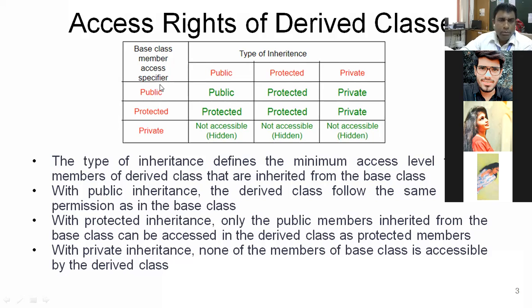If the base class member is private, then there is no option to see or access that base member function in the derived class. So this is the matrix of access rights of the derived class.